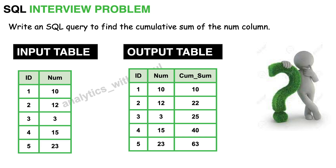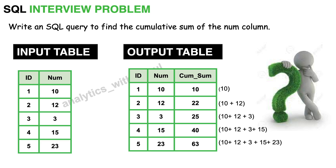On the left side we have the input table with two columns: ID and number. We are supposed to write an SQL query to find the cumulative sum of the number column. The output table has three columns: ID, number, and cum_sum. By cumulative sum I mean the sum of the number in the current row and all preceding rows. For the first row there is no preceding row, so we just print 10. For the second row we print the sum of 10 and 12, which is 22. For the third row we want the sum of 10, 12, and 3. There are two ways to solve this problem and I'll discuss both.